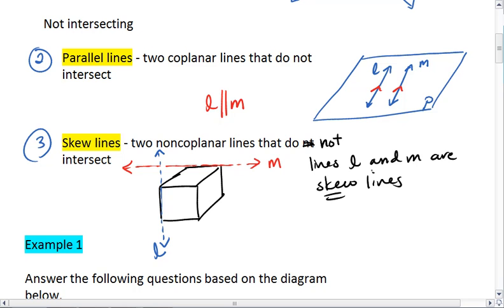The reason they are skew lines is because we can imagine lines L and M extending forever in either direction. These two lines will not intersect. They never will. However, they're also not parallel, because it is impossible to put both of them on the same plane. Thus, we have the definition for skew lines, which is two non-coplanar lines that do not intersect.